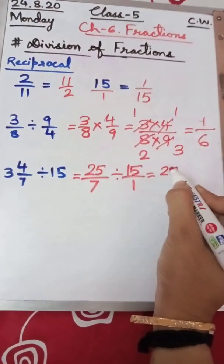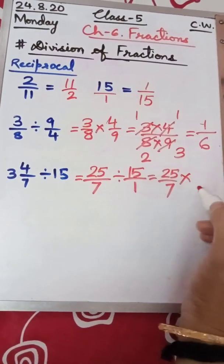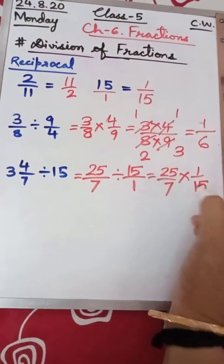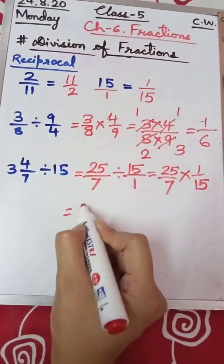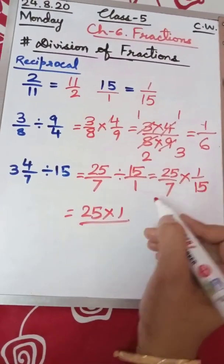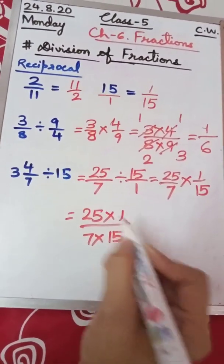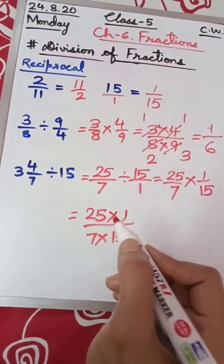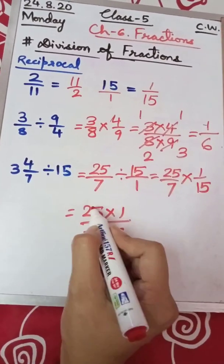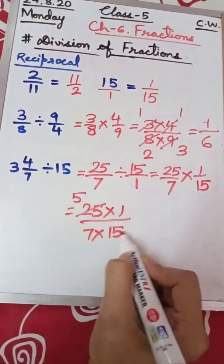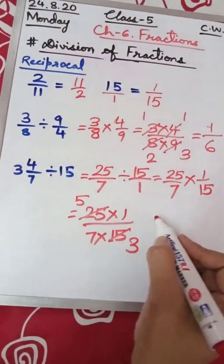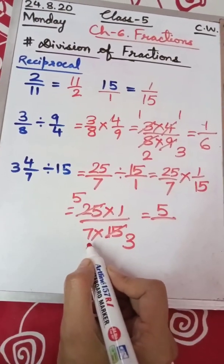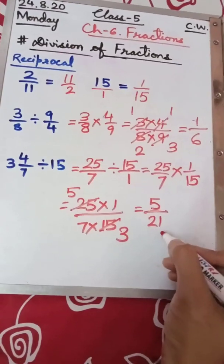Now we will follow the reciprocal rule: the first fraction will be written as it is, the division sign will be turned into multiplication, and we will reciprocal the second fraction. So 15 by 1 will become 1 by 15. Now it is simple multiplication. Numerators are multiplied together — that is 25 and 1. Check whether any numerator and denominator have a common factor: yes, 25 and 15 have common factor 5. Five 5s are 25, five 3s are 15. Multiply the numerator: 5 ones are 5. Multiply the denominator: 7 threes are 21. So the answer is 5 by 21.